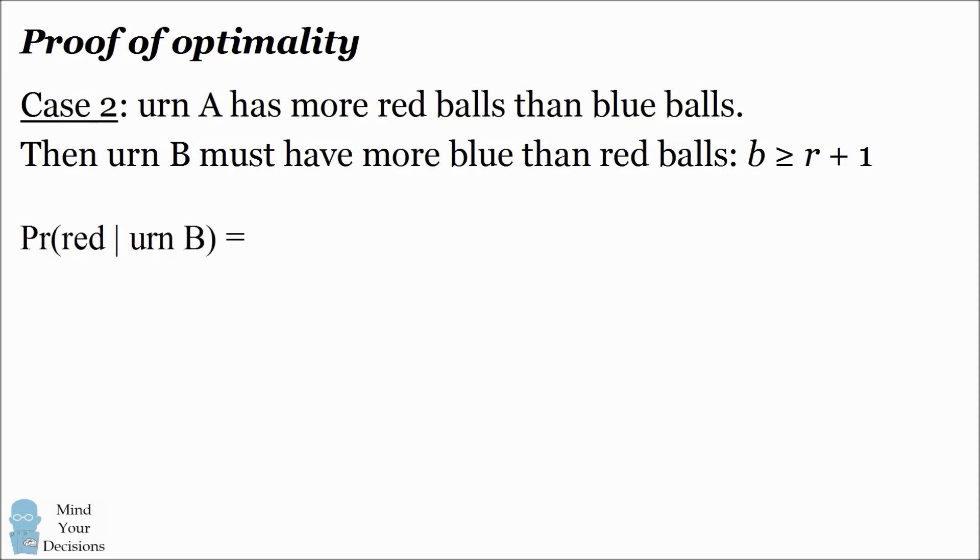What's the probability of selecting a red ball from urn B? This is the number of red balls divided by the total number of balls in urn B. Because we have a lower bound on b, this places an upper bound on the fraction. We substitute r plus 1 as the lower bound on b. We can simplify this to be the fraction r divided by 2r plus 1.